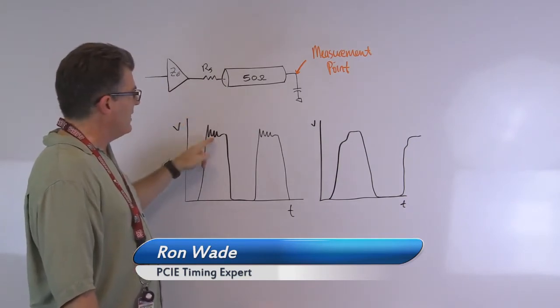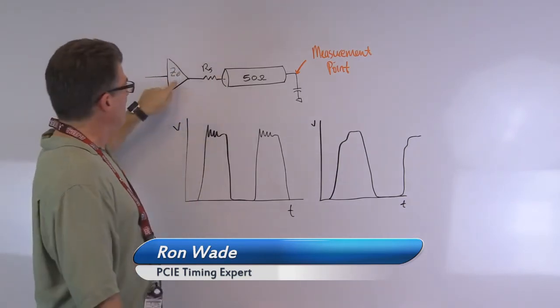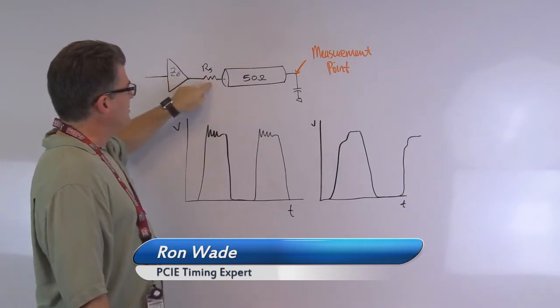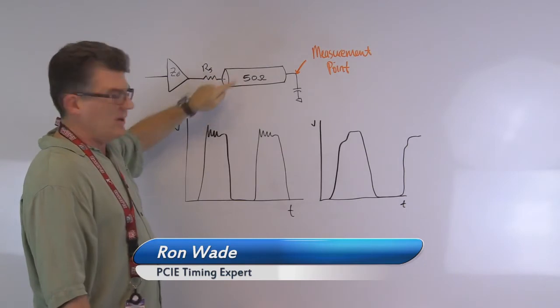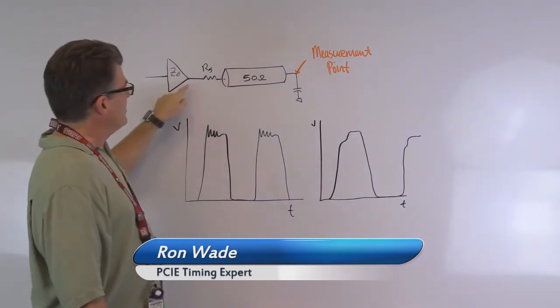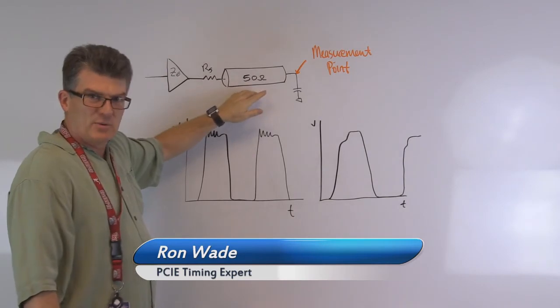If you have ringing up here, that means when the driver's pulling up, this impedance is low. This impedance plus the resistance is less than 50 ohms, whereas when it's pulling down the way it's drawn here, the impedance plus the resistor is exactly equal to 50 ohms.